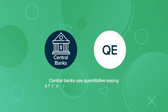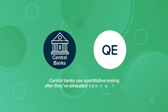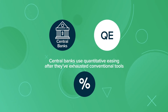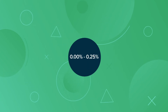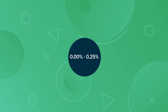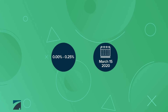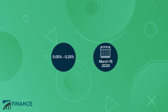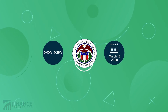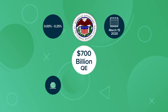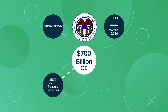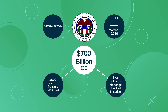Central banks use quantitative easing after they've exhausted conventional tools, such as lowering the interest rate. For example, after announcing a new interest rate target of 0 to 0.25% on March 15, 2020, the Federal Reserve announced a $700 billion quantitative easing program — $500 billion of Treasury securities and $200 billion of mortgage-backed securities.